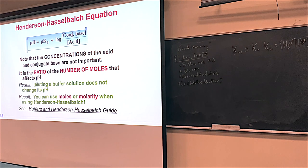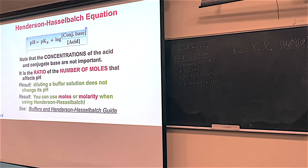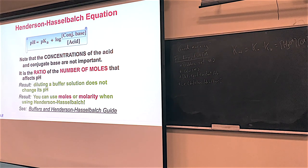If you add base, your pH will go up — it might be 0.00001 units, but it will go up because base is contrary to hydroxide. Acids will make the pH go down. Because this is a ratio of base to acid, it really is more about a ratio of moles, not so much about the volume. In theory, you can dilute a buffer with water and still have the same pH.